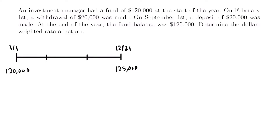We are told that on February 1st, a withdrawal of $20,000 was made, so we'll label that as minus $20,000. On September 1st, a deposit of $20,000 is made, so that will be plus $20,000. Remember: the only time you look at the fund balance for a dollar-weighted rate of return is at the beginning and end of the year. Now that we have our timeline set up, we can build the equation of value to solve for the dollar-weighted rate of return.